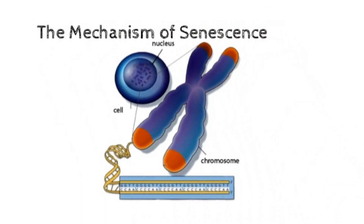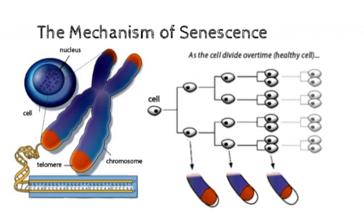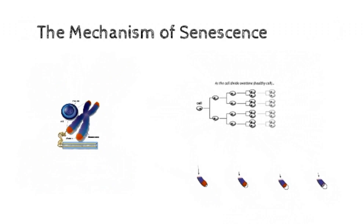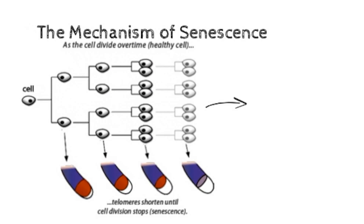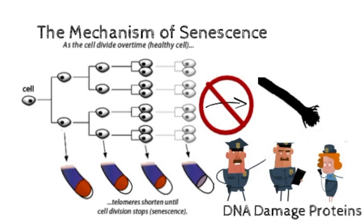Senescence can be caused by something called telomere erosion. On the ends of our chromosomes, we have non-coding sequences of DNA called telomeres. Picture the chromosome as a shoelace and the telomeres as shoelace caps. When a cell divides, the ends of the chromosome can't be copied completely. This means the shoelace caps get slightly shorter every division. If division continues after the ends erode, the shoelace will shrink, cutting off invaluable segments of DNA. To prevent this, policing proteins step in when telomeres get short and halt cellular division.